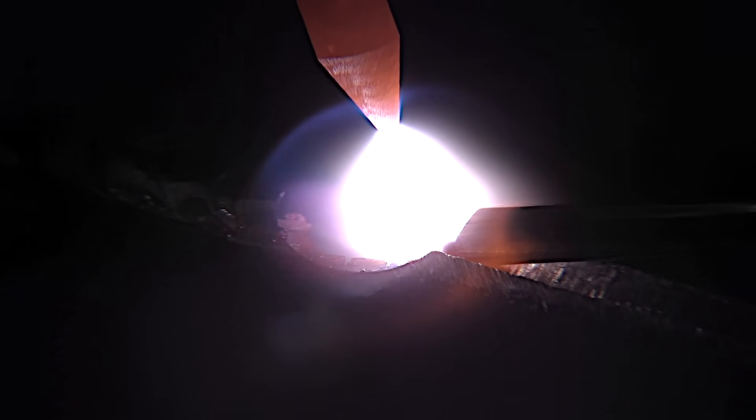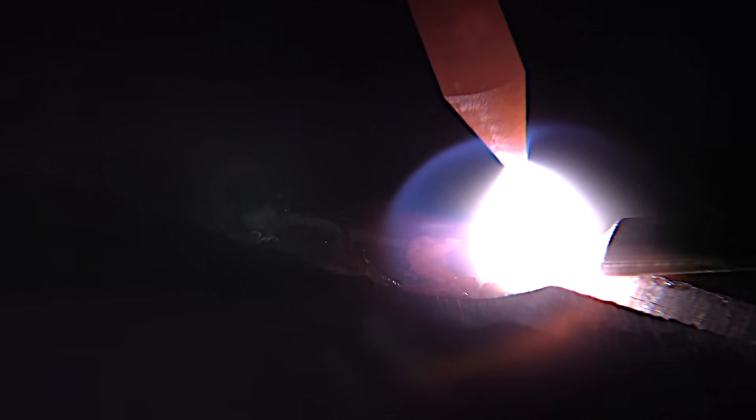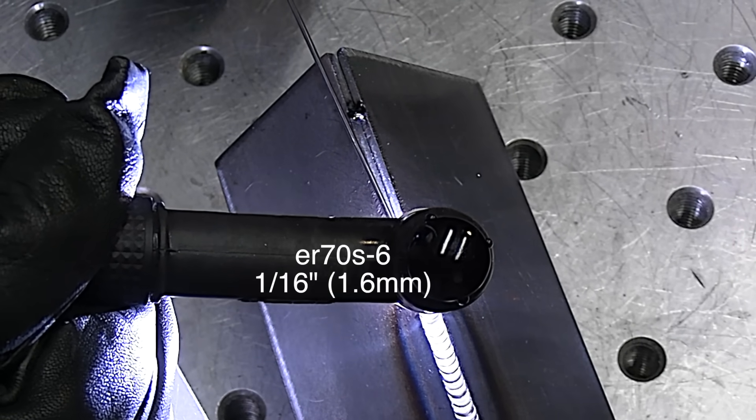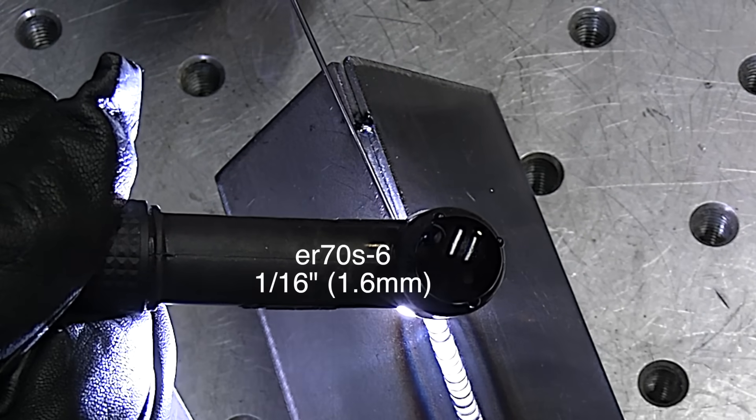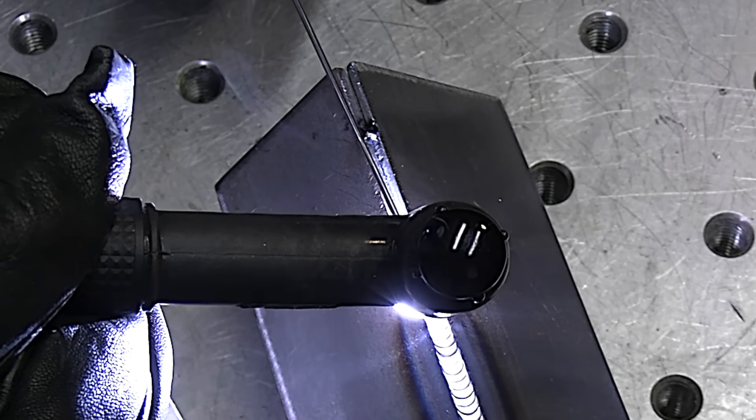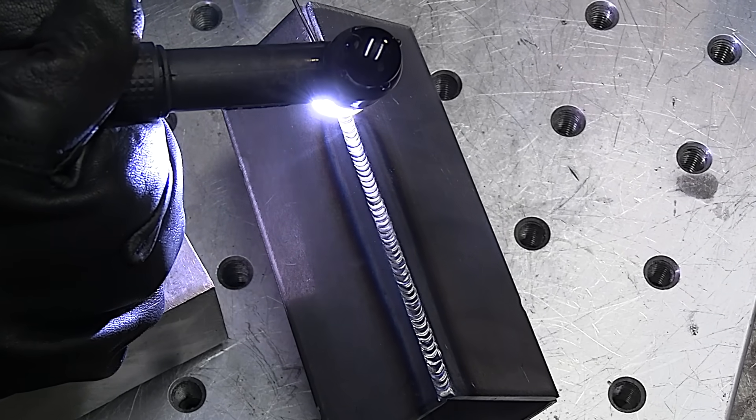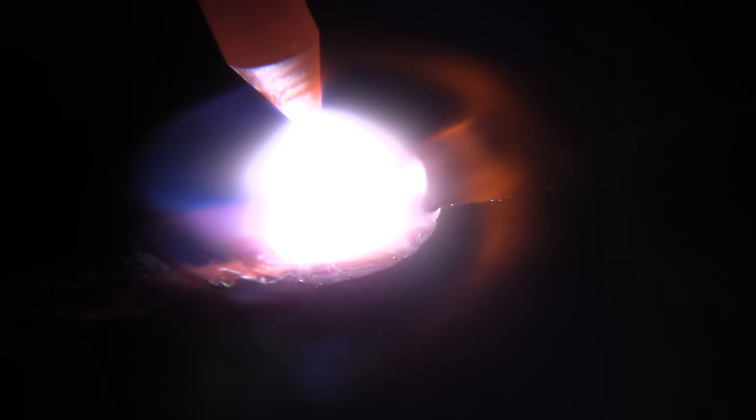3/32 electrode, 1/16th diameter ER70S6 filler wire. The only reason I use the ER70S6 instead of ER70S2, I just happen to have more of it than 1/16th. Not much difference in the two unless you're penetrating fully all the way through on a butt joint and then there seems to be a lot more difference.